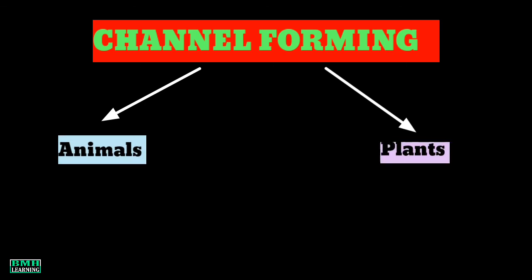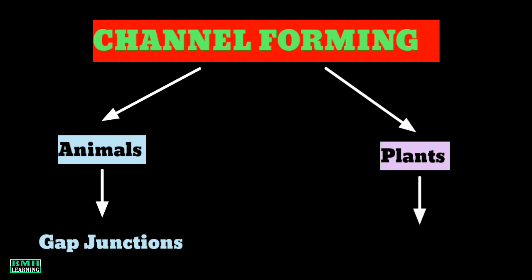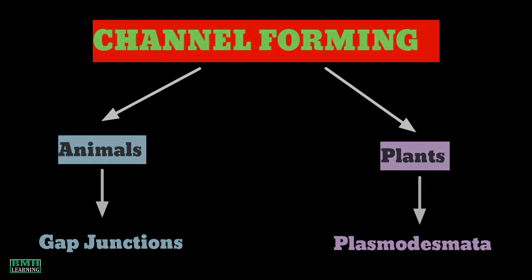Finally, the third type is channel-forming junctions. They are present both in animals and plants. In animals they are known as gap junctions, while in plants they are called plasmodesmata. This was all — thanks for watching.